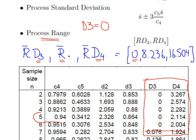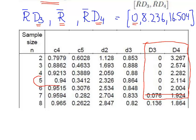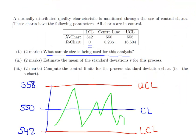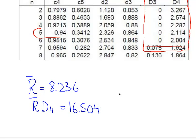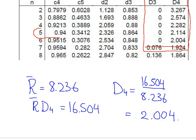We have R bar and R bar times D4. Let's use that. R bar equals 8.236, R bar times D4 equals 16.504. Therefore, D4 is 16.504 divided by 8.236. Working that out, you would get 2.004. So that means that the batch size is actually, in this case, 6. The batch size is 6. That was actually the first question answered.